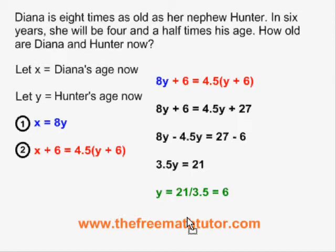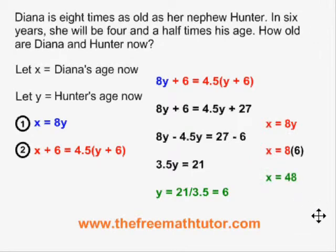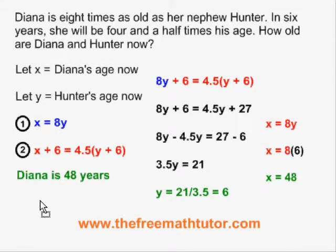Now that y equals six, I can plug that into the y position in either of the original equations to find x. Using the first equation, the blue one: x equals 8y becomes x equals 8 times 6, therefore x equals 48. The final answer is Diana is 48 years old and Hunter is six years old.